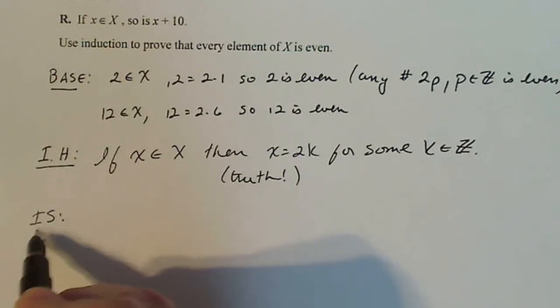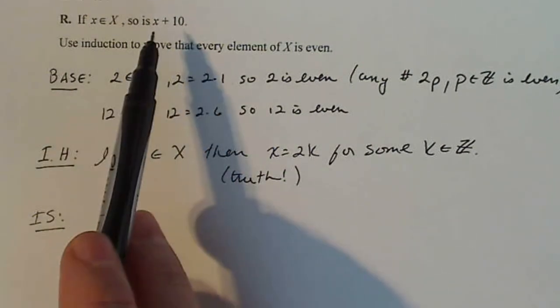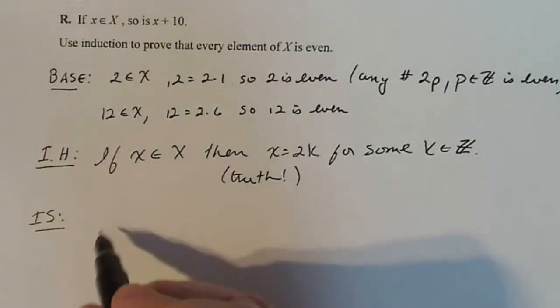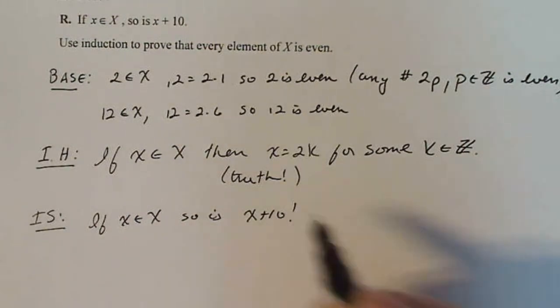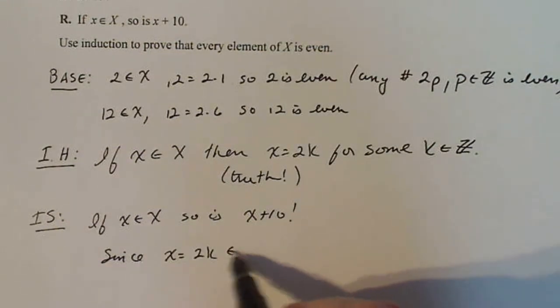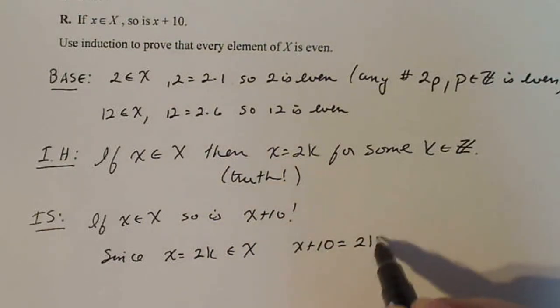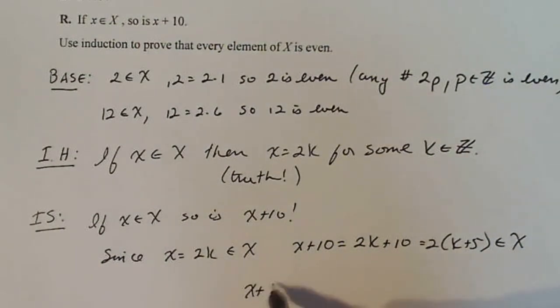Now my inductive step will look like this. Well, if I know that I have some x in X that's even, why not let's do the next x. So I know x is in X, so I can also say, let's just write that down: if x is in X, so is x plus 10. Then I can say, well since x equals 2k is in X, then x plus 10 equals 2k plus 10 equals 2 times (k plus 5) is also in X. Now I can say here that x plus 10 is equal to 2 times the quantity (k plus 5) is also even.